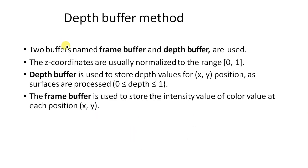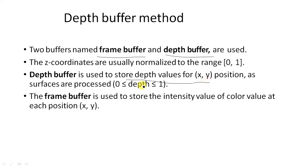The depth buffer algorithm consists of two parts: the frame buffer and the depth buffer. The frame buffer is used to store the intensity value of a pixel. The depth buffer is used to store the Z value. In this approach, the Z coordinates are normalized to the range 0 to 1. The depth buffer stores depth values for each XY position after projecting the image to the view plane.